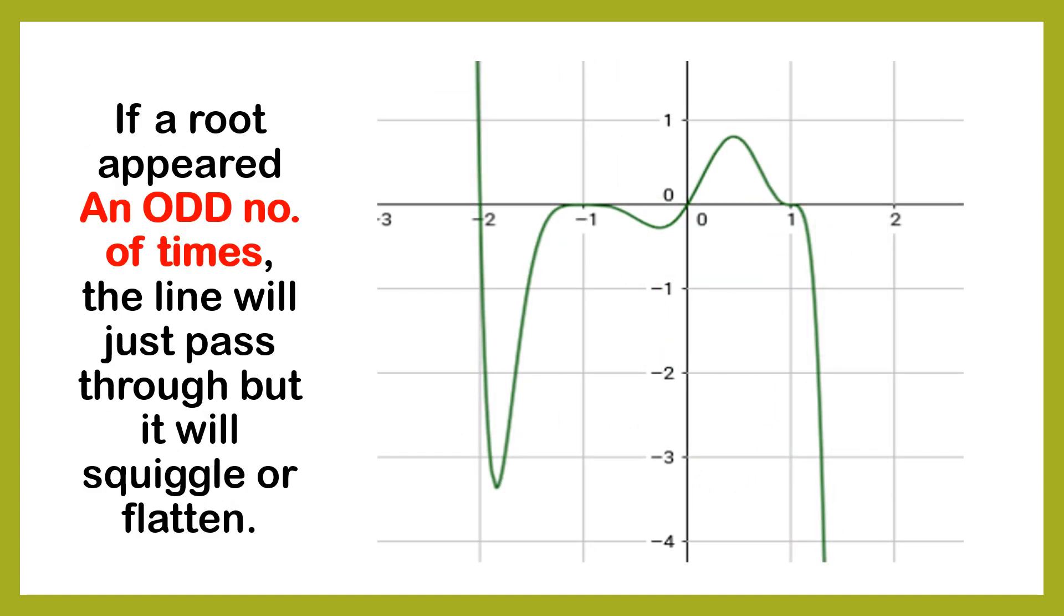If a root appeared an odd number of times, what are odd numbers? 3, 5, 7, 9, the line will pass through, but it will squiggle or flatten. If you look here, this is the example. It passed through, but it flattened a bit. So, if it appeared more times, it flattens more. And it passes through.